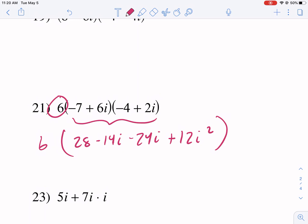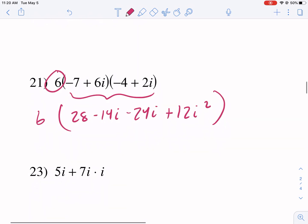-14, -24. Okay, we're golden. Now, we had something that should raise an alarm. We have an i squared.